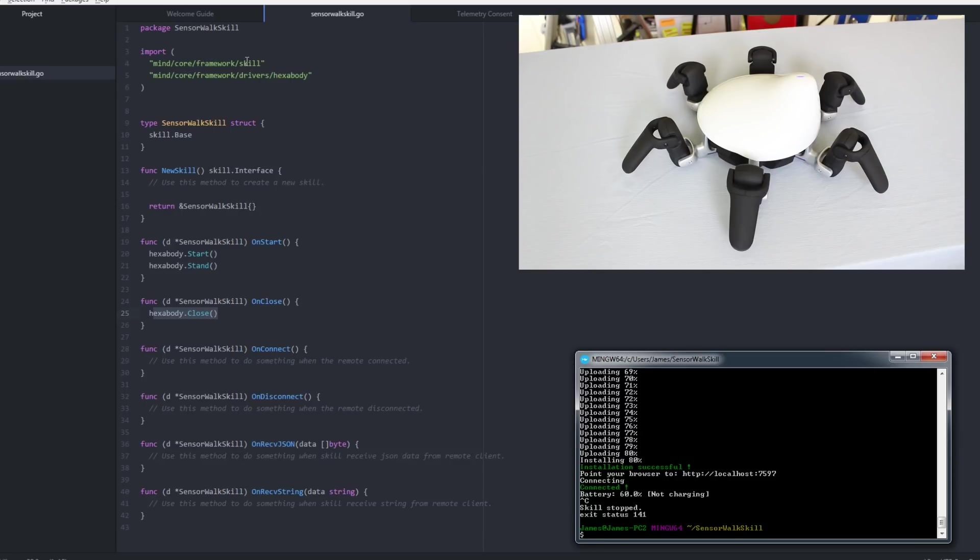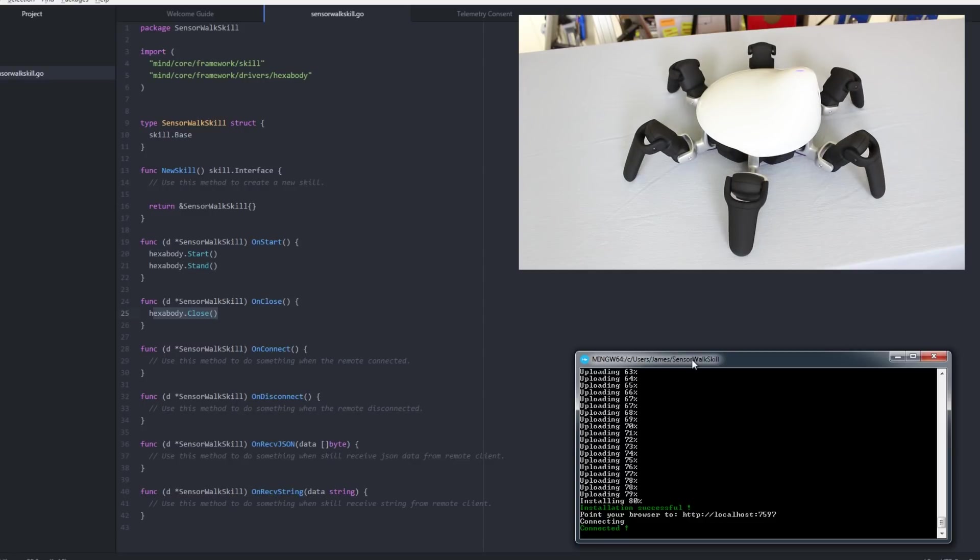And I'm coding that in Atom. And the programming language is a language called Go. And all I've done is added in my framework skill, my framework drivers hex body. And on start, I've said to start and to stand. And obviously on close, we've got close. So if I now go in and type mind run, it should upload and run that on the robot. Now I've already built and packed my package, which is just a case of typing mind build and mind pack. So hopefully once this is uploaded, we should see the robot do something. That is uploaded and now it's installed and we should see the robot stand up. And if I quit from that, it should sit down again.